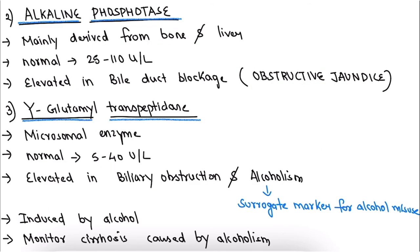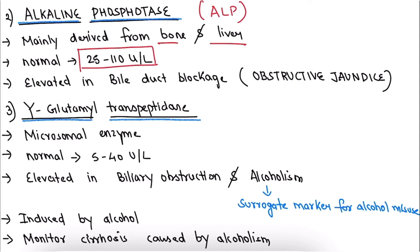The second serum enzyme is alkaline phosphatase (ALP). It is mainly derived from bone and liver, so this test alone does not confirm a liver problem — there may be a problem in bone as well. The normal range of ALP is 25 to 110 units per liter, and it is elevated in bile duct blockage, that is obstructive jaundice.